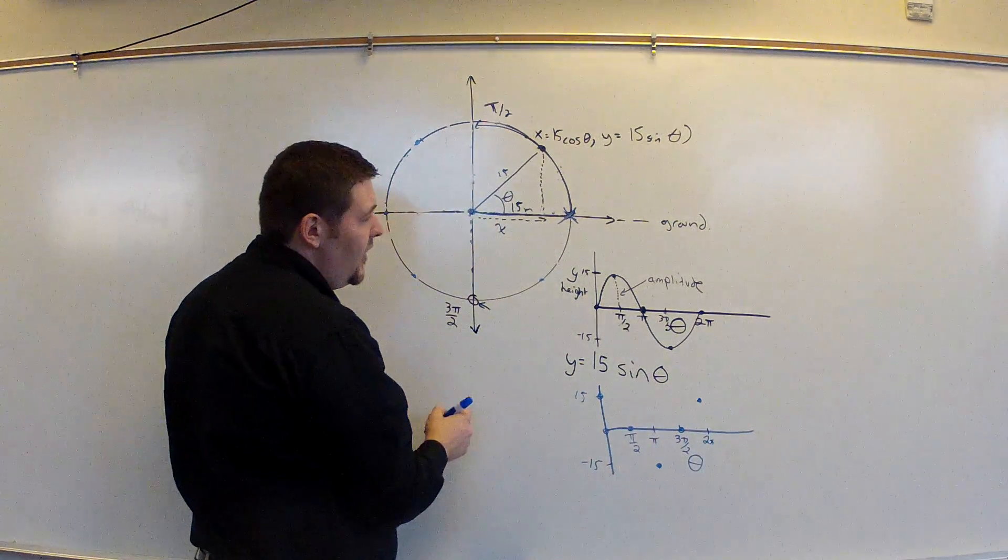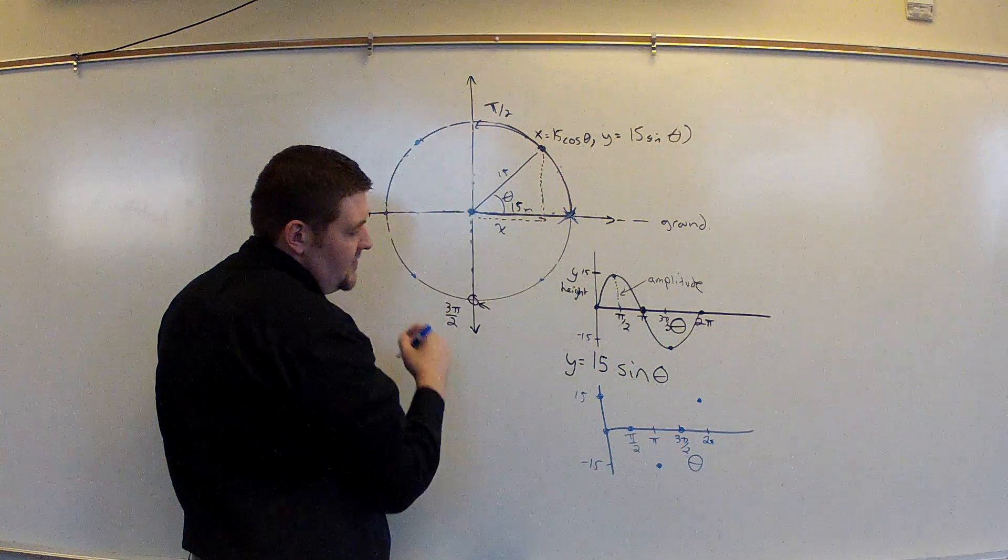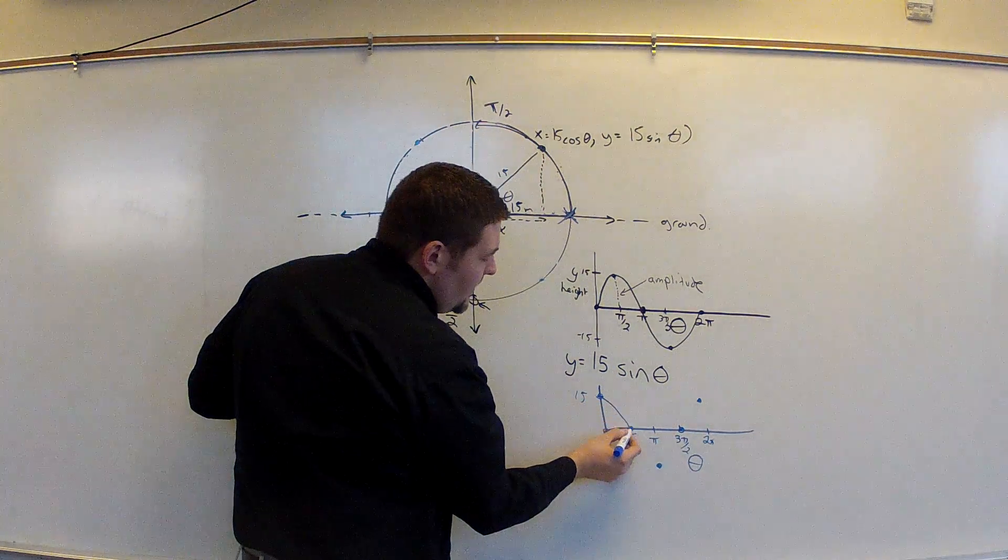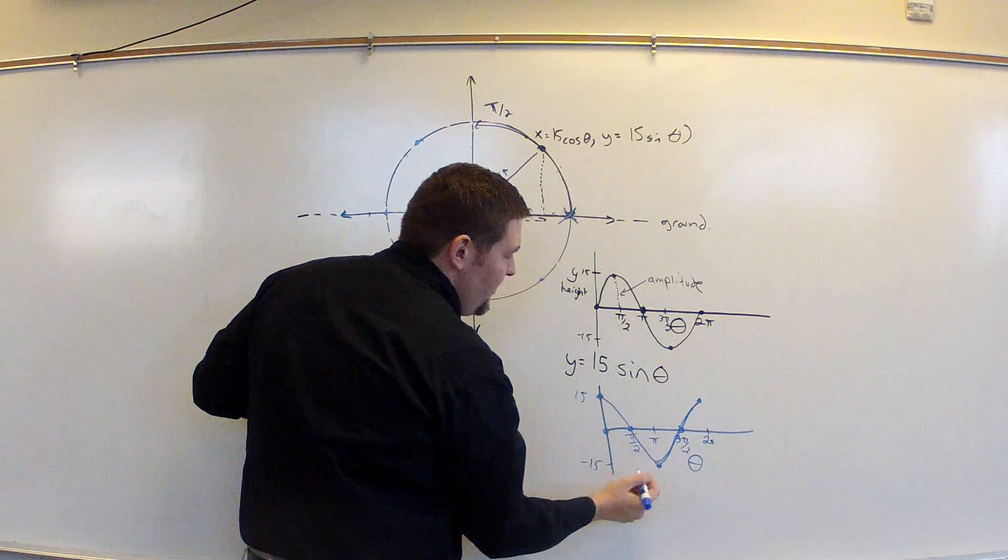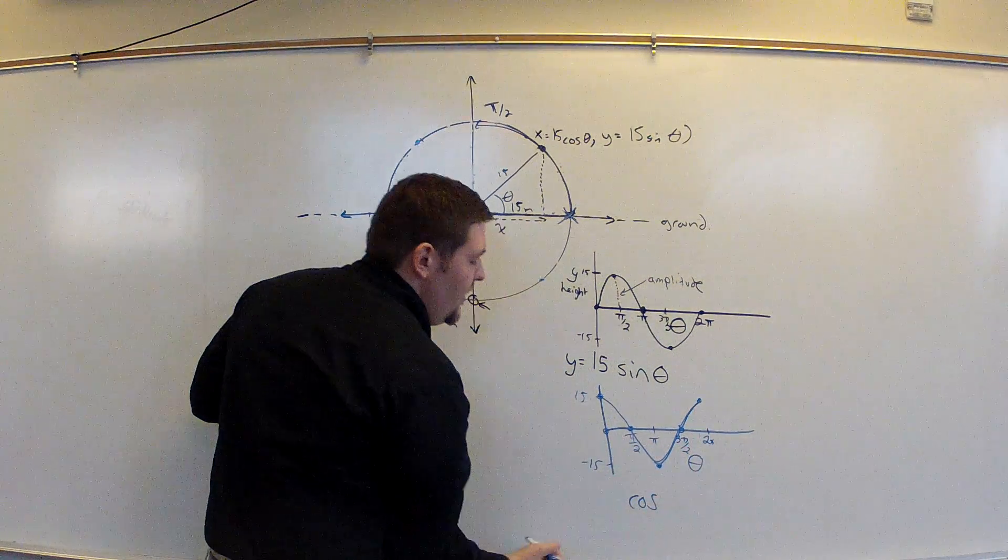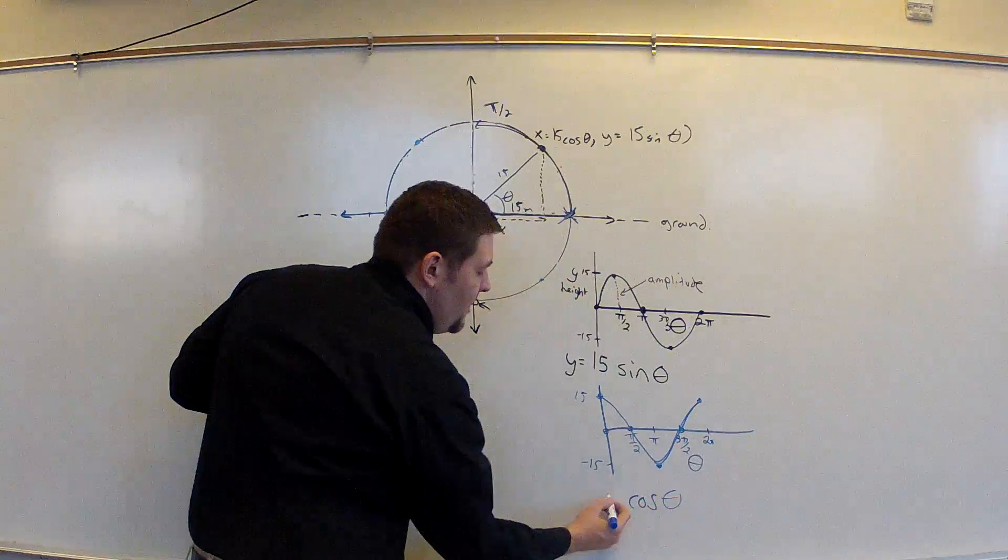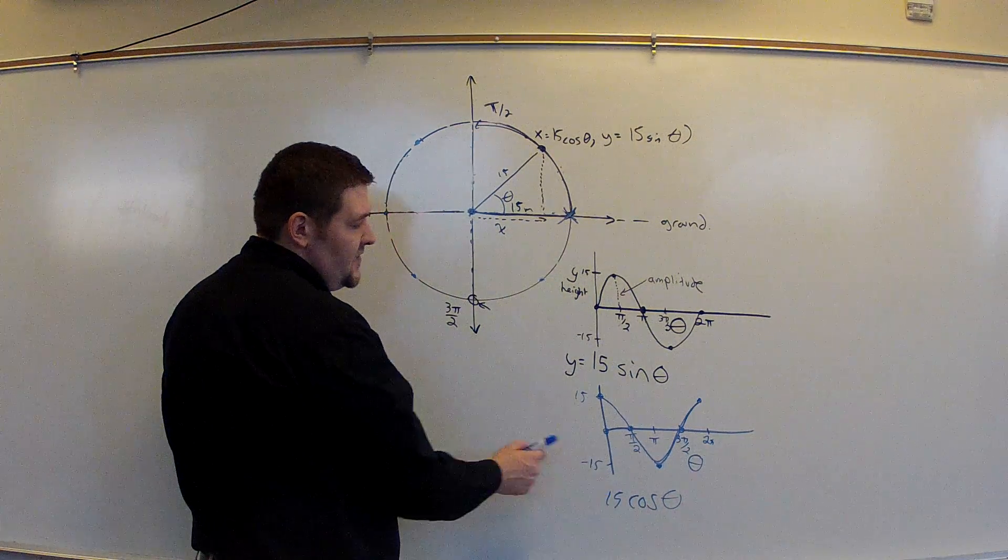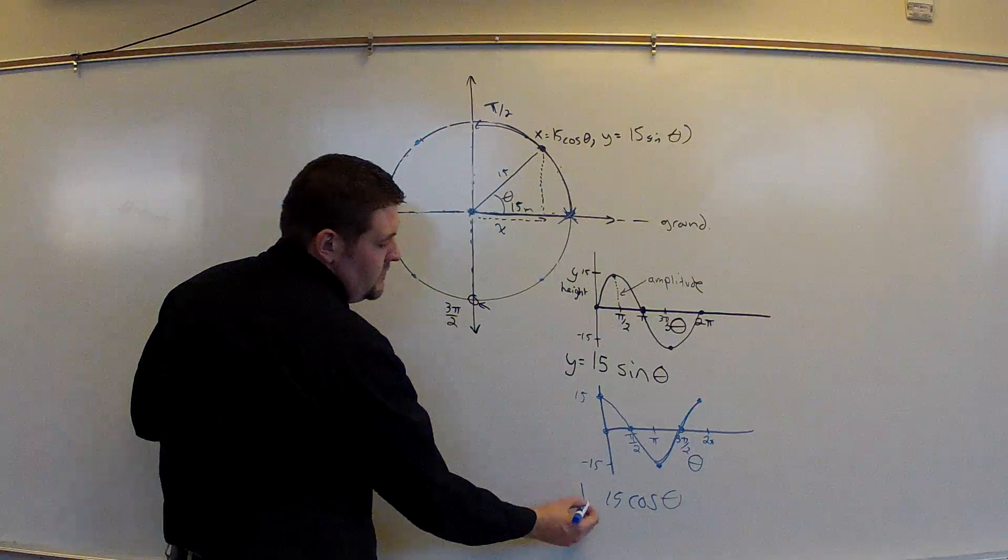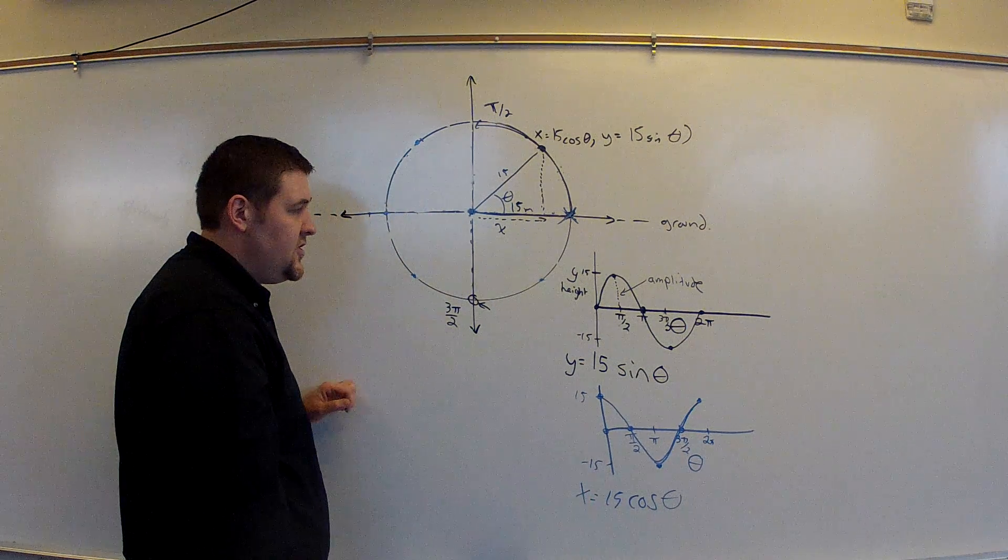This curve could also be smoothed out if I connected the horizontal pieces as we go to be a curve that looks something like this. And this curve is referenced as the cosine curve. And that's cosine of theta, 15 cosine of theta given the radius of 15. This is actually referencing your x values for any position around a circle.